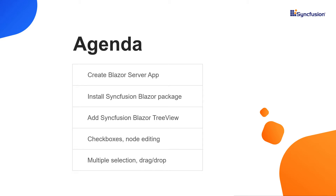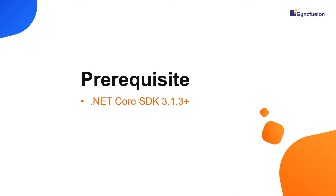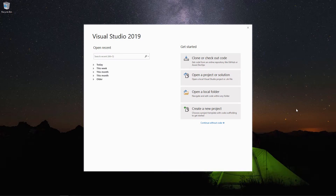You can create a Blazor application using either Visual Studio 2019 or Visual Studio Code. In this video, I will create a server-side Blazor application using Visual Studio 2019. I have installed .NET Core SDK 3.1.3. To follow along with this video, one should have a basic understanding of C#, HTML and CSS. You can also watch a detailed video on Blazor and Syncfusion controls titled 'Create a Blazor Server App and Add Syncfusion Blazor Components', which I have shared in the YouTube card.